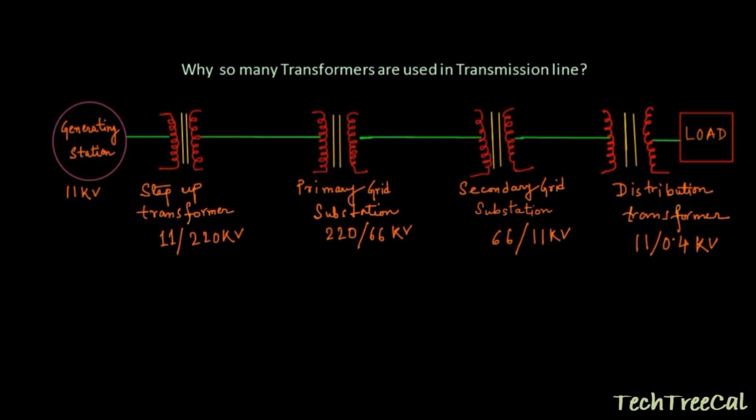Now this is a distribution single line diagram representation of a transmission line from its generation to load. A general confusion that comes in a student's mind is why there are so many transformers used to supply power from generating station to load.